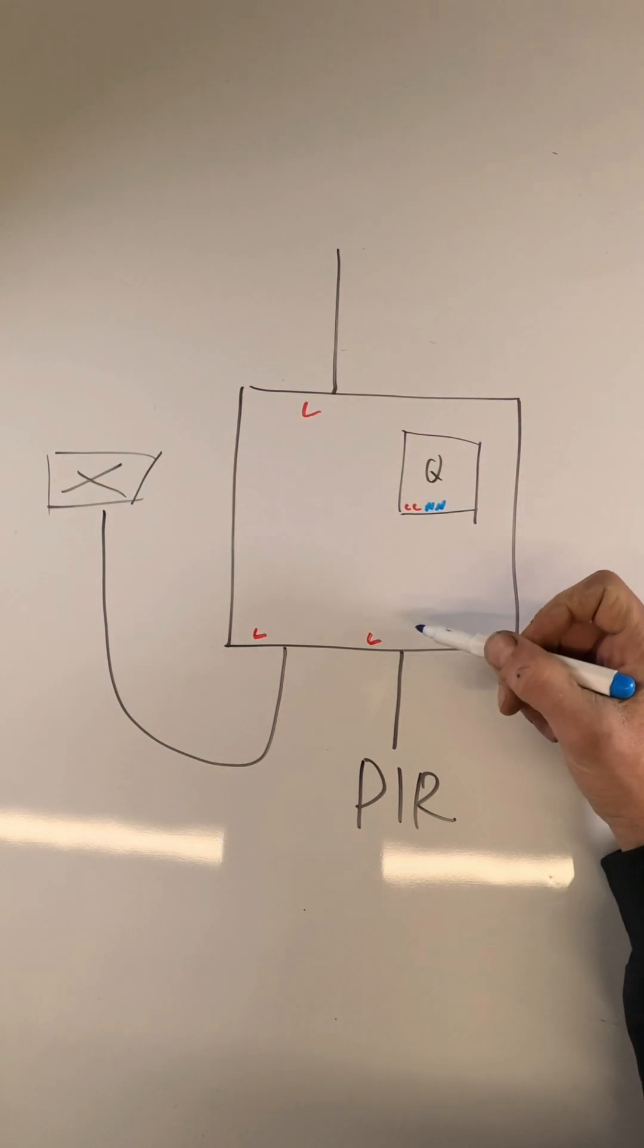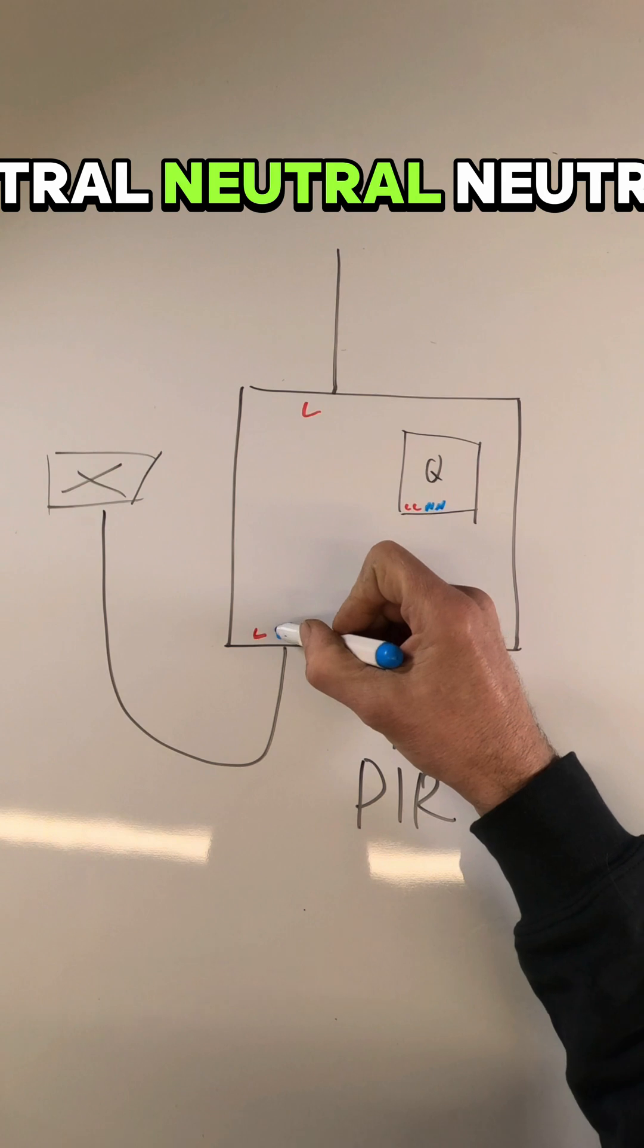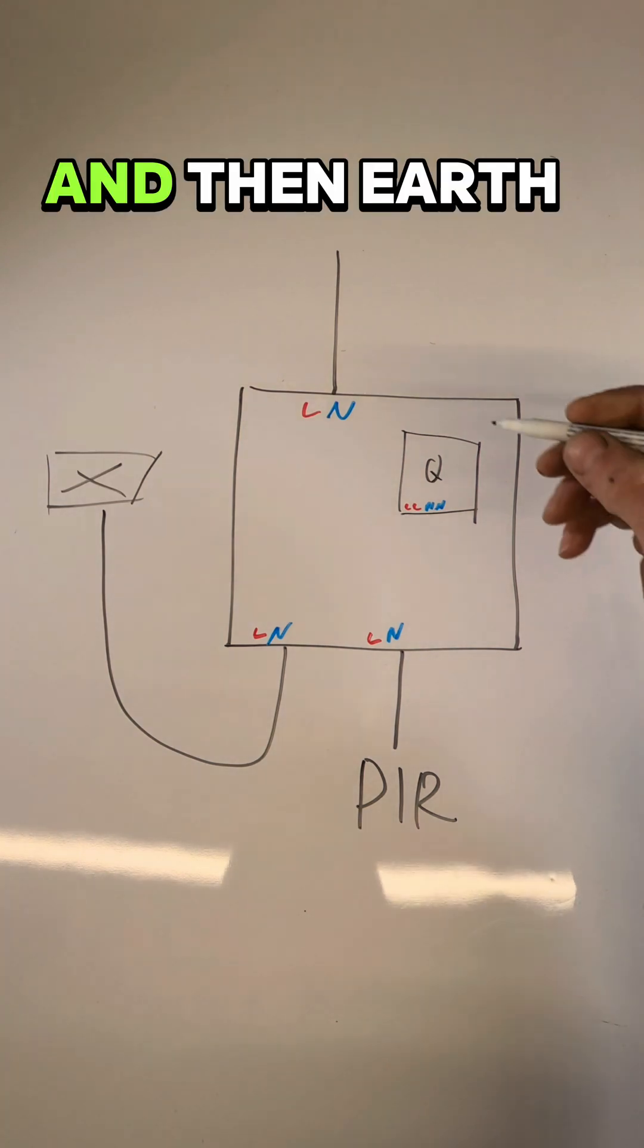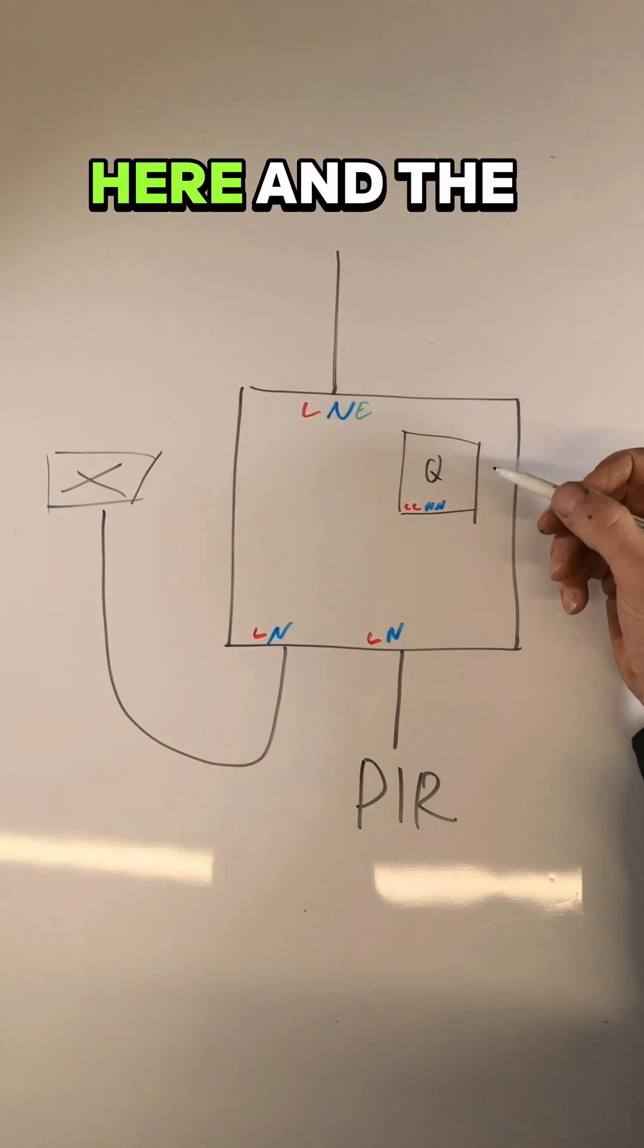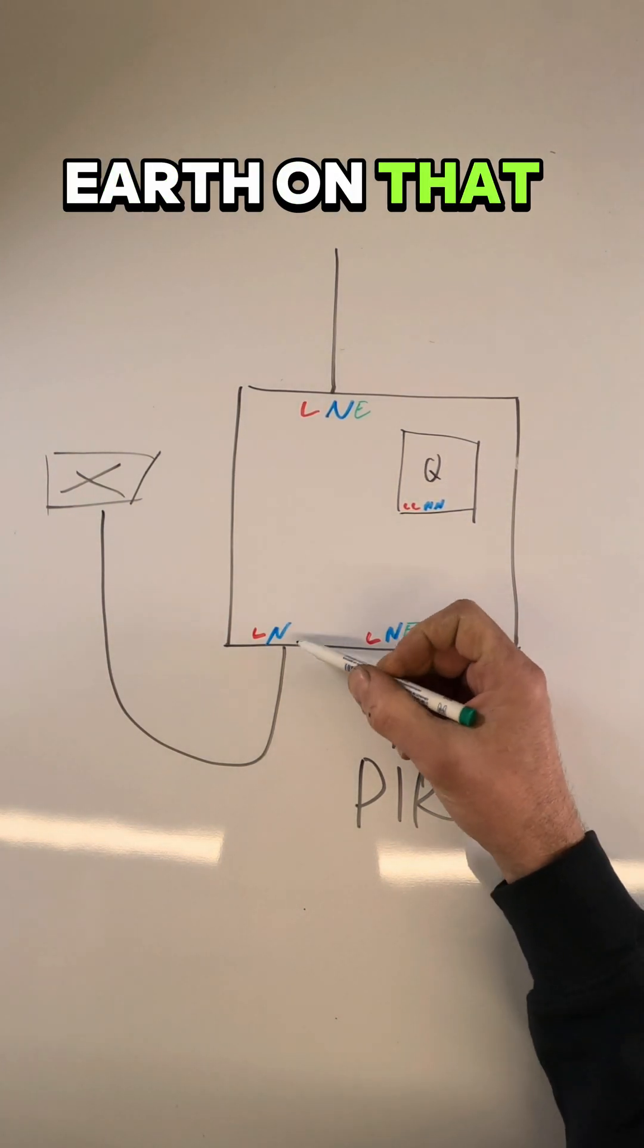And on the Quintic we've got live, live, neutral, neutral, neutral, and then earth here. The earth doesn't matter, it hasn't got an earth on that.